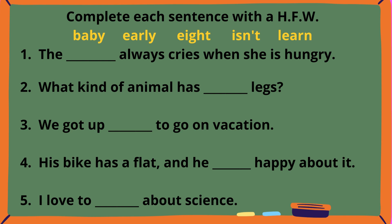Complete each sentence on page one using one of the following words: Baby, Early, Eight, Isn't, Learn. Read each sentence with me and then write which word goes in the correct sentence. Sentence one: The blank always cries when she is hungry. Sentence two: What kind of animal has blank legs? Sentence three: We got up blank to go on vacation. Sentence four: His bike has a flat and he blank happy about it. Sentence five: I love to blank about science.